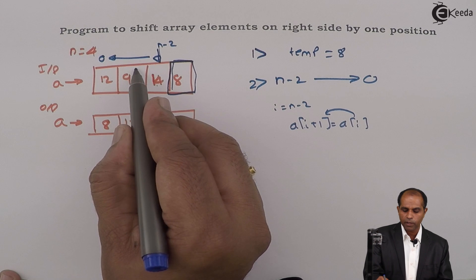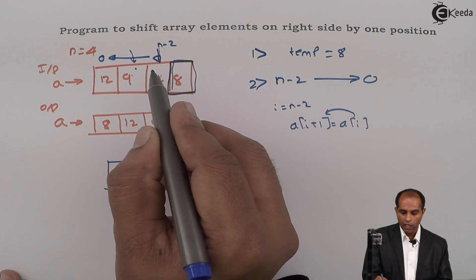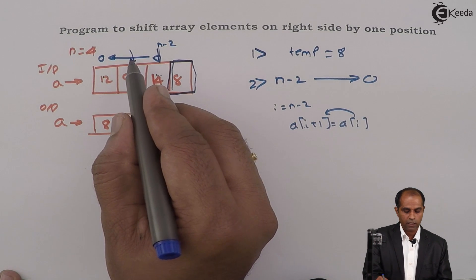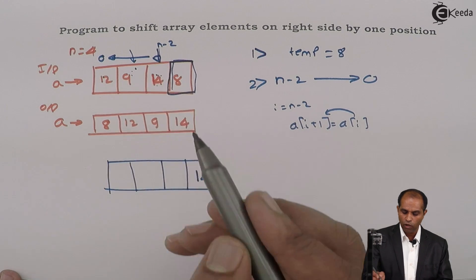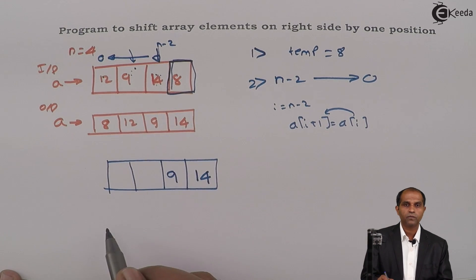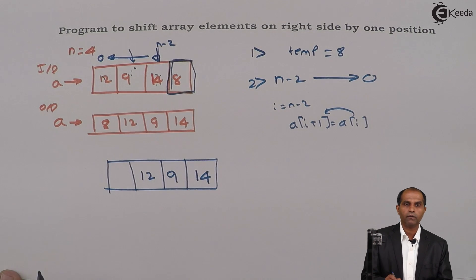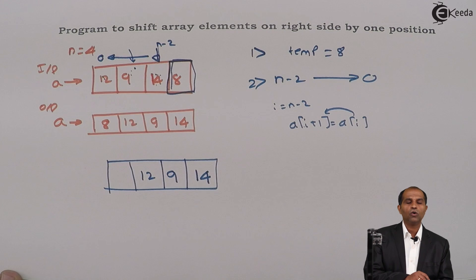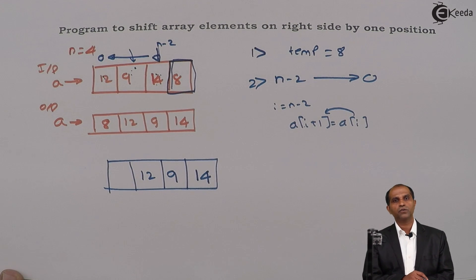i gets further decremented. In this example, indices are 0, 1, 2, 3. A of 3 should be copied into A of 4. After that, A of 1 should go to A of 2 — that becomes 9. A of 0 should go to A of 1 — that becomes 12. When i is reduced to minus 1, the loop condition becomes false.